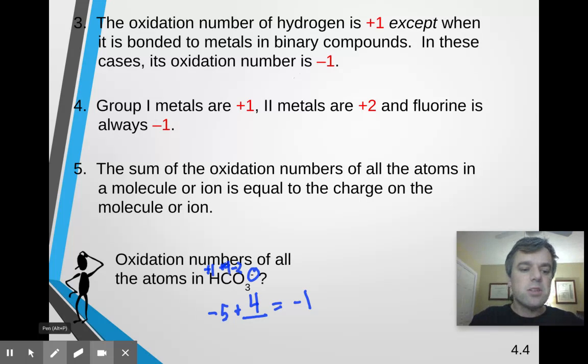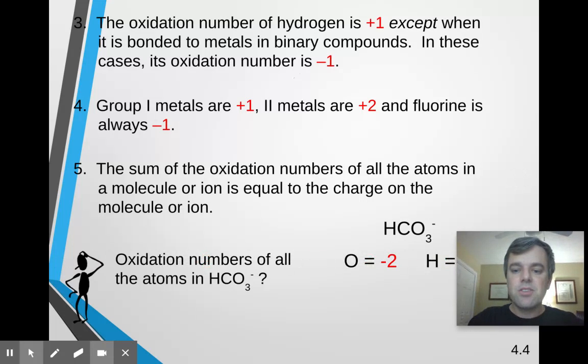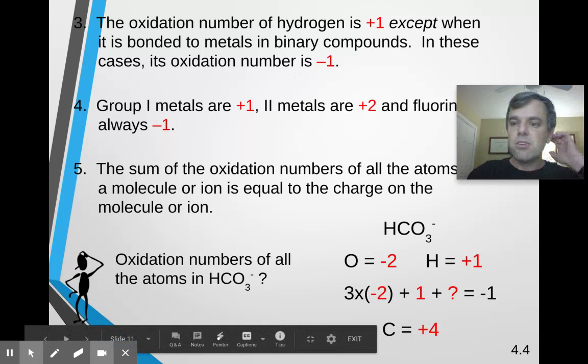And when you're talking about oxidation numbers, it is absolutely essential that you specify whether the charge is positive or negative. You don't want to leave any ambiguity whatsoever. You want to specify the positives versus the negatives. So, if we check this out, oxygen's negative 2, hydrogen's plus 1. So, if we have 3 negative 2's and a positive 1, then carbon is plus 4.